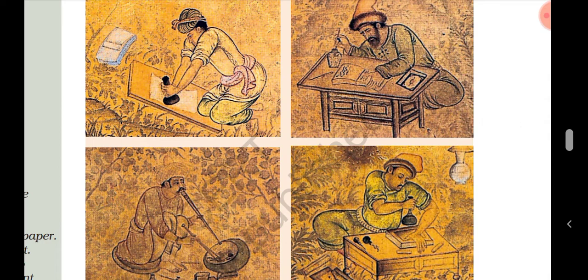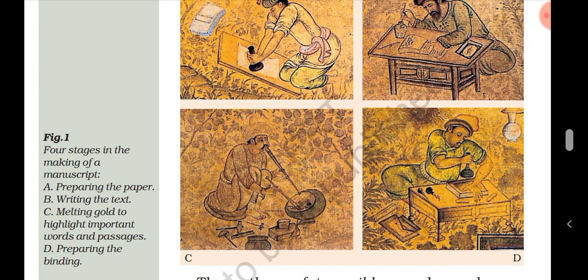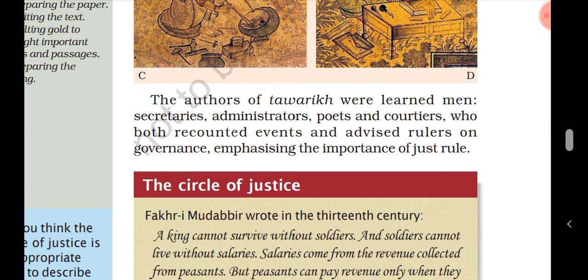There were four stages in the making of a manuscript: first, preparing the paper; second, writing the text; third, melting gold to highlight important words and passages; and fourth, preparing the binding. The authors of Twariks were learned men — secretaries, administrators, poets, and courtiers — who both recounted events and advised rulers on governance, emphasizing the importance of just rule.